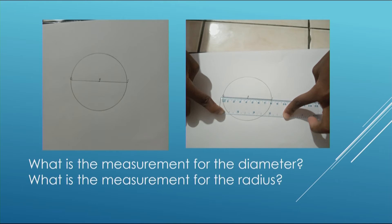It is four centimeters. So from the explanation, you can easily see that the radius is half of the diameter. If the diameter is eight, then the radius is four because four is half of eight. Suppose you have the diameter ten — what is half of ten? Half of ten is five, so five is the radius for the diameter which is ten.